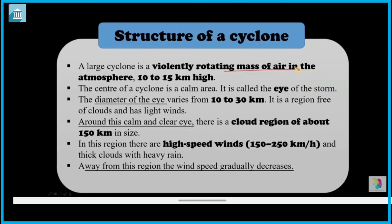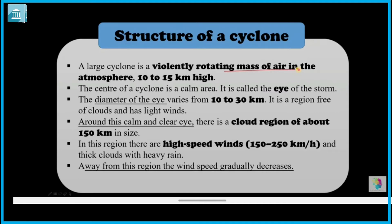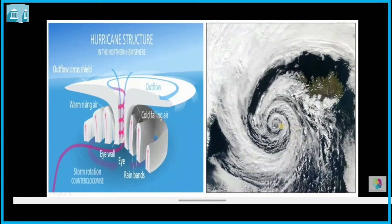The structure of a cyclone: it is a violently rotating mass of air in the atmosphere, almost 10 to 15 km high. The central area — where the low pressure is — is called the eye of the storm, and it is a very calm area.